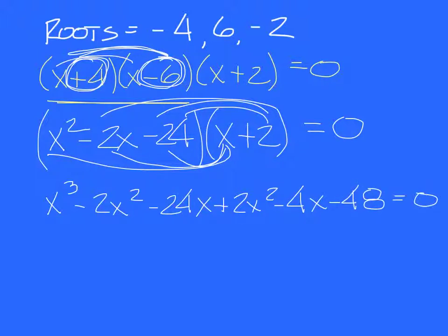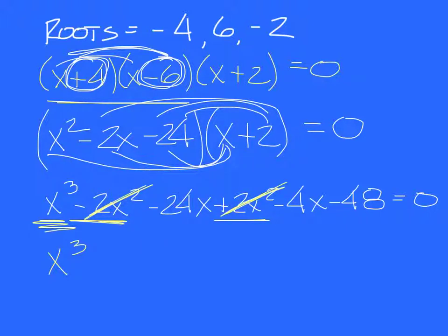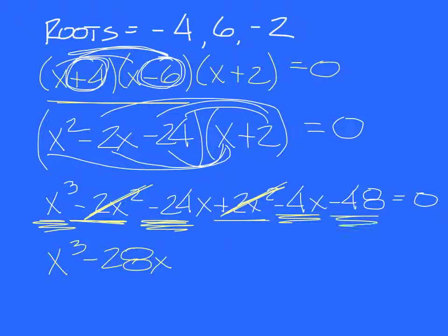And now go through and multiply by positive 2 through everything in the first quantity, and that would be 2x squared minus 4x minus 48. For the final answer, you only have one x to the third term, so it's x to the third. You have minus 2x squared plus 2x squared — they cancel each other out, so they're gone. Don't write zero x squared. Then you go to your x terms: minus 24x minus 4x is minus 28x. And then minus 48.